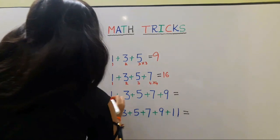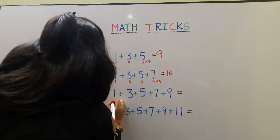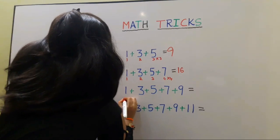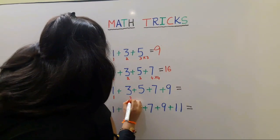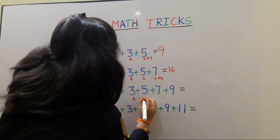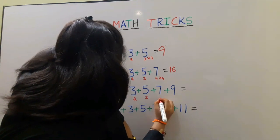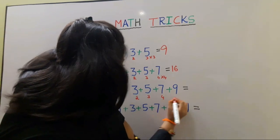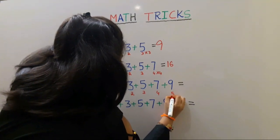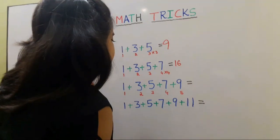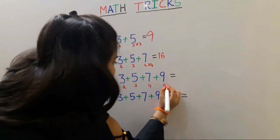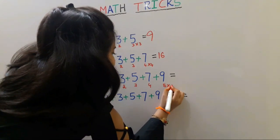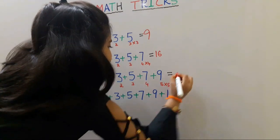Next sum. Again we should count the numbers: 1, 2, 3, 4, 5. We should multiply by the same number. 5 5's are 25.